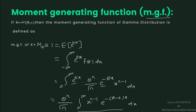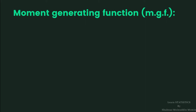We shall write the value of this integral by comparing with a standard gamma integral. In the previous lecture, we have already learned what a gamma integral is. So I shall compare our integration with the gamma integral: integration from 0 to infinity of x raised to n minus 1, e raised to minus ax dx, and the value of this integral is gamma(n) divided by a raised to n.